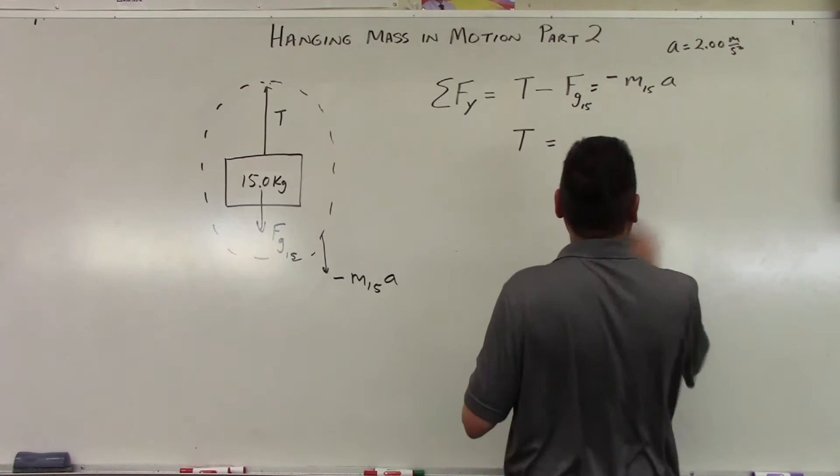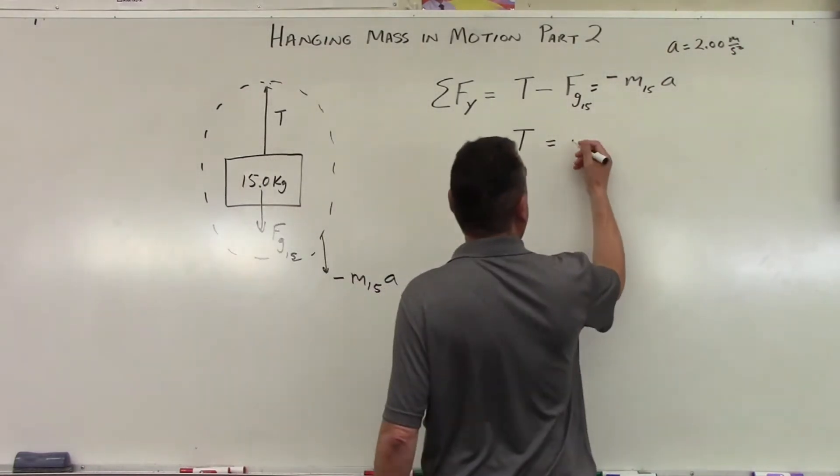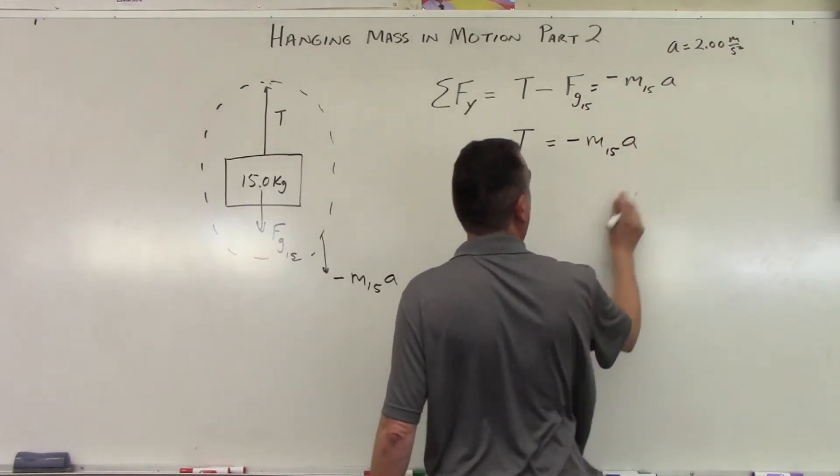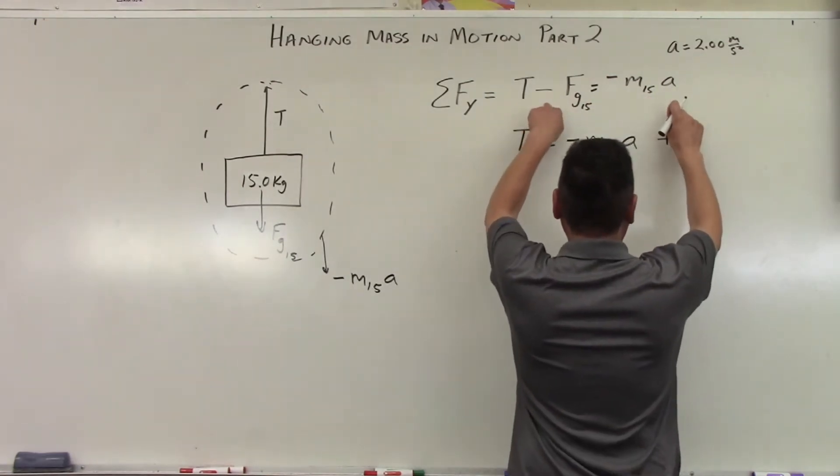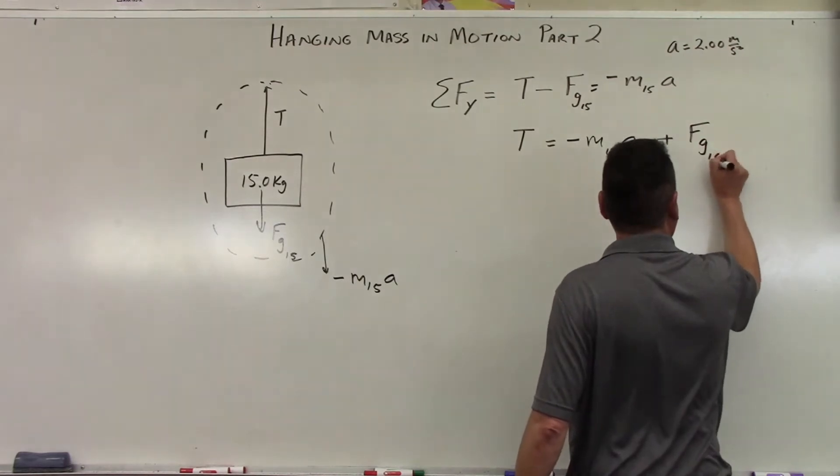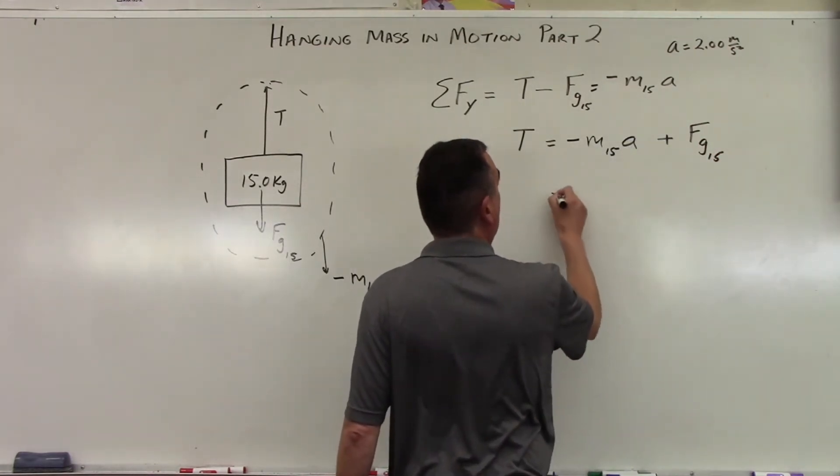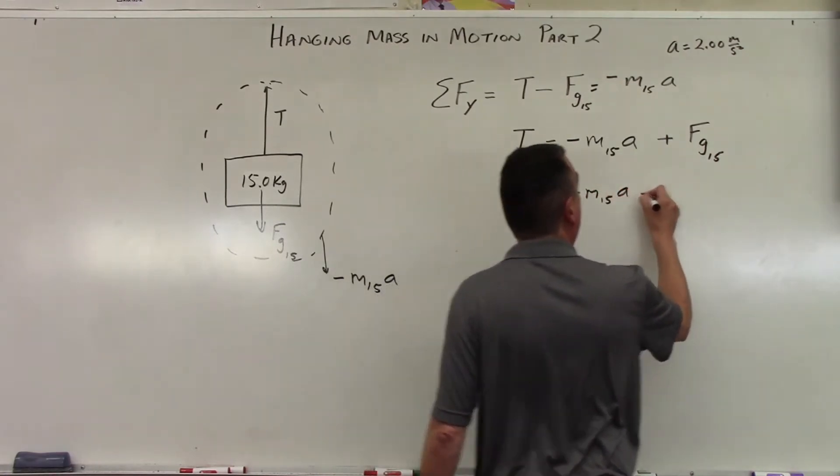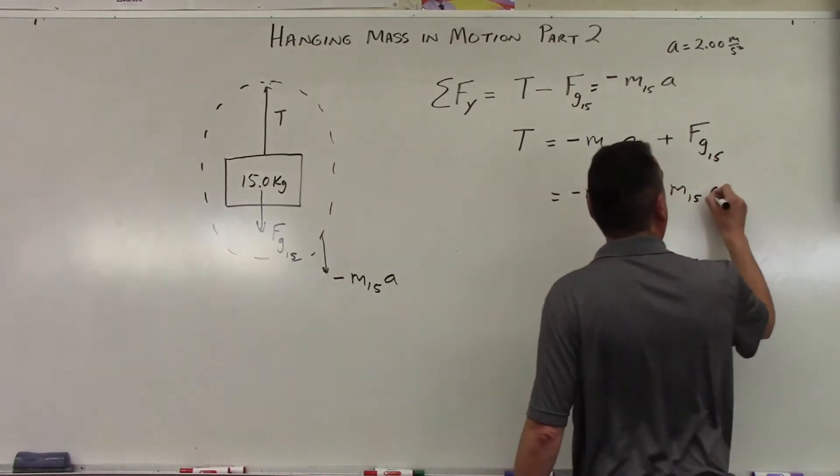What we'll have is the negative mass sub 15 times A plus, because I'm going to add the gravitational force on both sides, due to gravity sub 15.